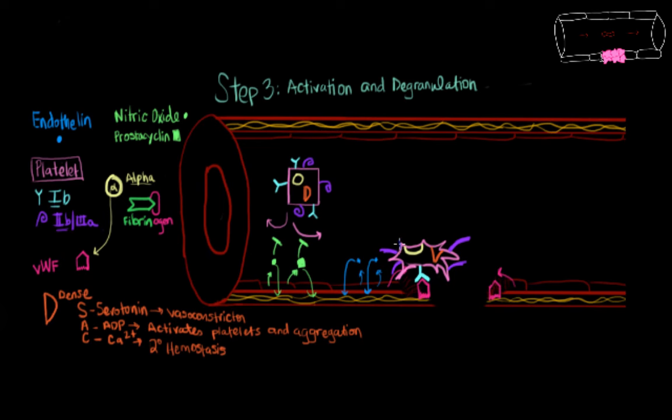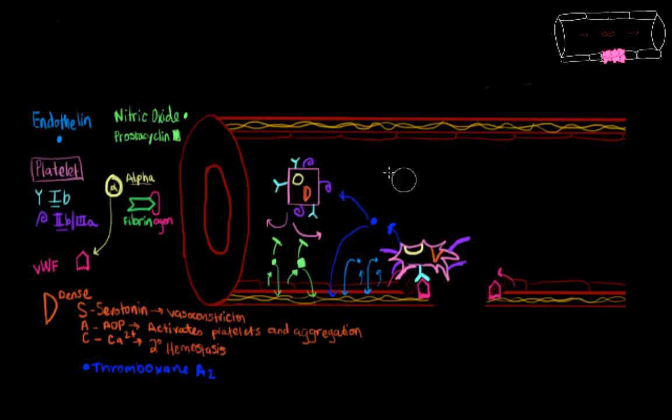The third thing that an activated platelet does is secrete thromboxane A2. Thromboxane A2 is actually the exact opposite of prostacyclin, and it's made by the same enzyme. And thromboxane also plays a tug of war with prostacyclin. It acts on smooth muscle cells to cause vasoconstriction, and it also causes more platelets to activate and helps with aggregation.